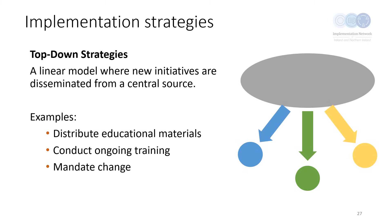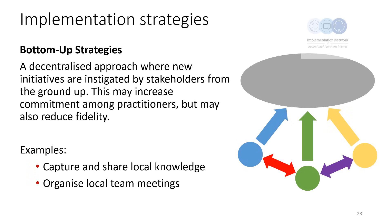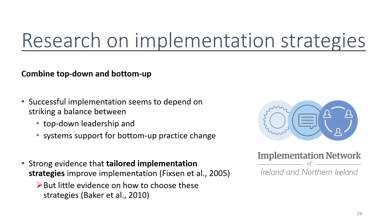Implementation strategies can be delivered top-down — this is when a decision and action plan is agreed by management. Information and changes are then communicated through a hierarchical structure. The planning and decision-making occurs at a high level in the agency and the innovation is implemented without much room for adjustment or input, for example distributing educational materials or mandating change. A bottom-up strategy is a decentralised approach where new initiatives are instigated by stakeholders from the ground up, involving more collaboration across all levels. Research would indicate that successful implementation often depends on striking a balance between top-down leadership and support for bottom-up system change.